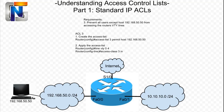So that wraps up our video on a standard IP access control list. Hope you're going to look forward to Part 2, Extended IP Access Lists, and then Part 3, Advanced Wildcard Masks. I would like to thank you all for viewing this video. I would like to remind you to please visit our Twitter at www.twitter.com/NextGent. You can also visit our blog, which has these video updates as well as some interesting posts, at www.nextgent.com/blog. Thank you.